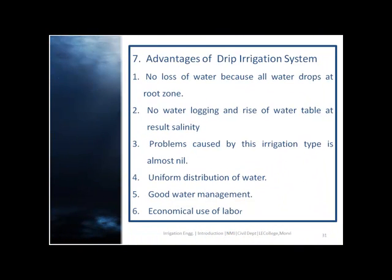Advantages of drip irrigation system: first, no loss of water because all water drops at the root zone; second, no water logging and rise of water table resulting in salinity; third, problems caused by this irrigation type are almost nil; fourth, uniform distribution of water; fifth, good water management; and sixth, economical use of labor.